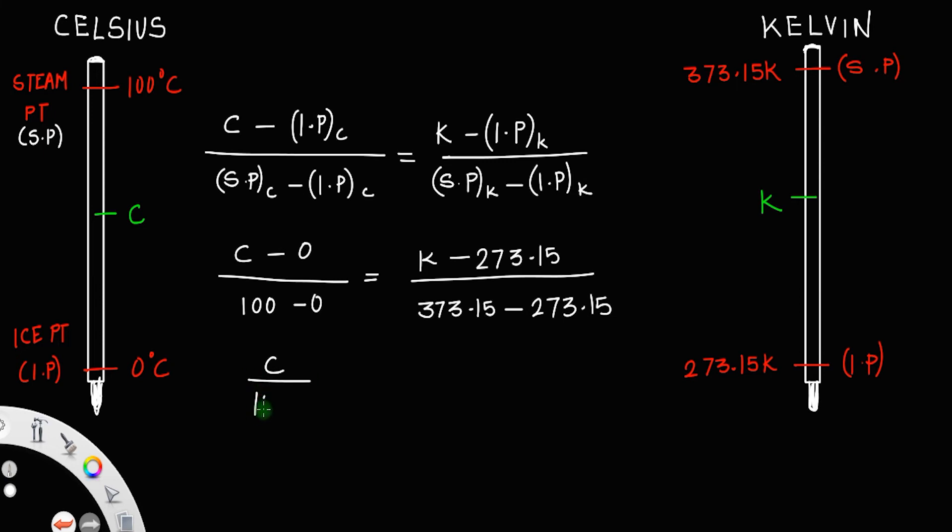C divided by 100 is equal to K minus 273.15, divided by 100. You can cancel the 100s, which implies